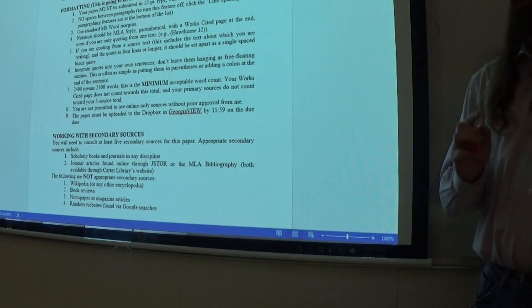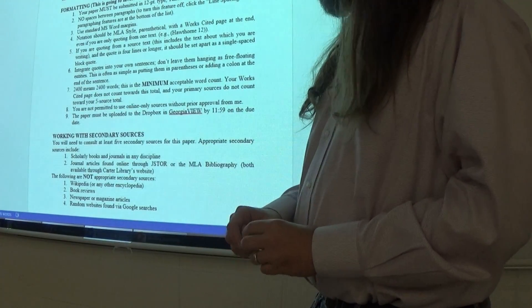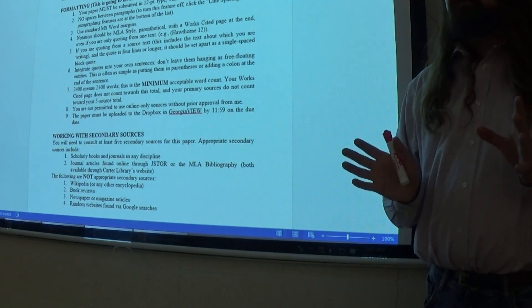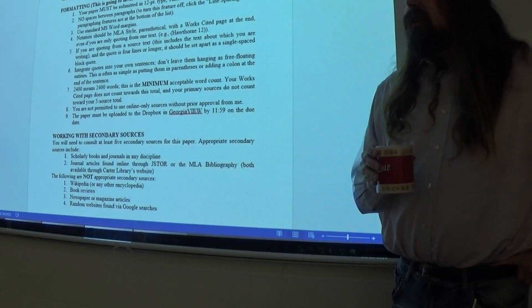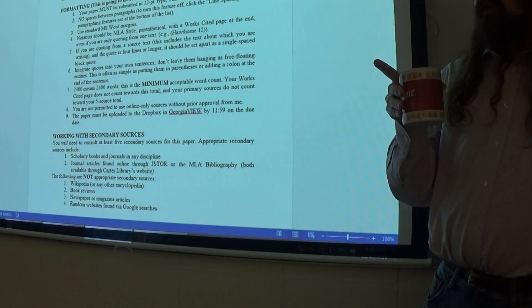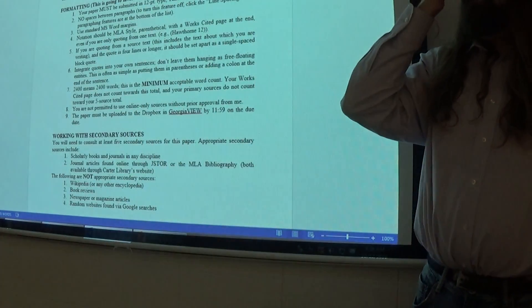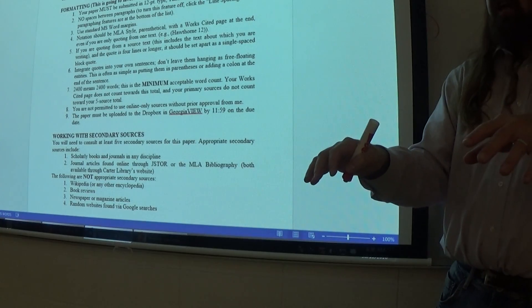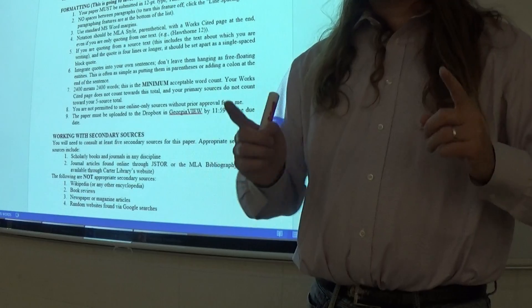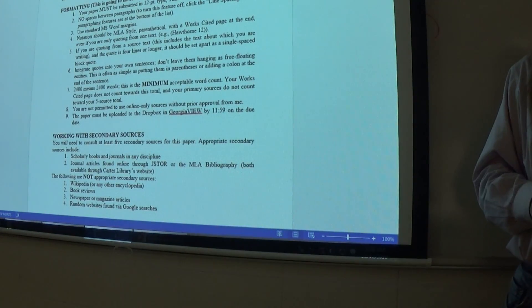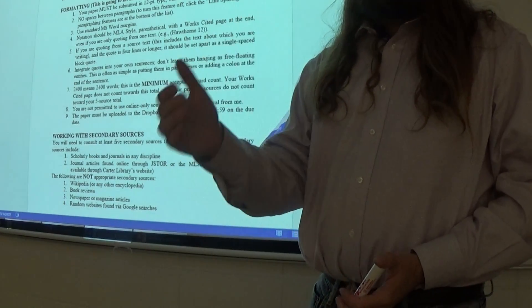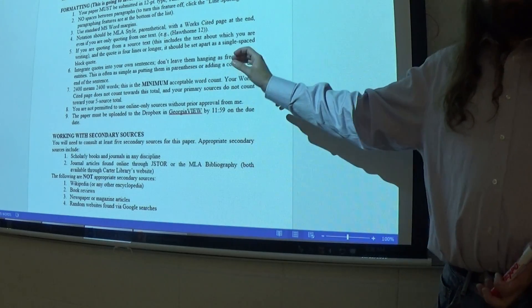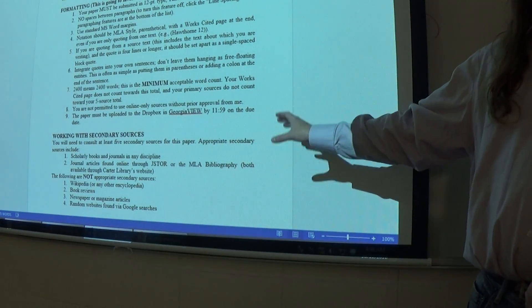Apart from not using random websites that you find on Google searches, don't use Wikipedia or any other encyclopedia. An encyclopedia is just a sort of first go-to source for general information about a topic. You're not really going to get any kind of in-depth scholarly examination of anything from an encyclopedia article.